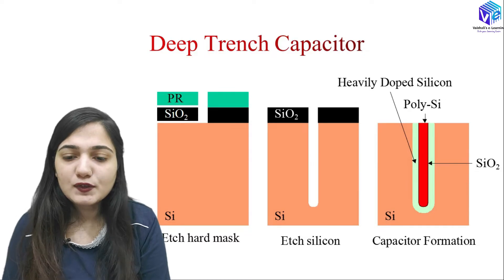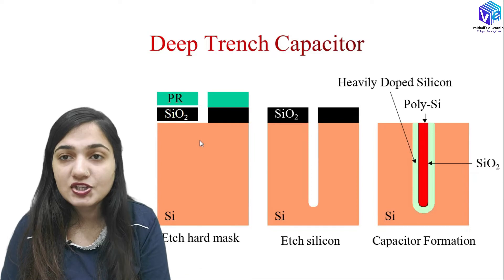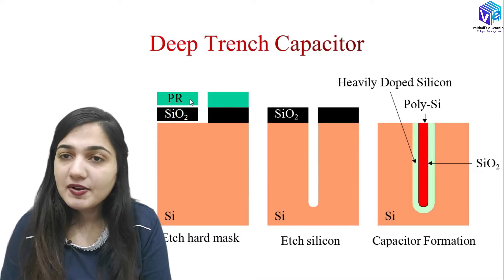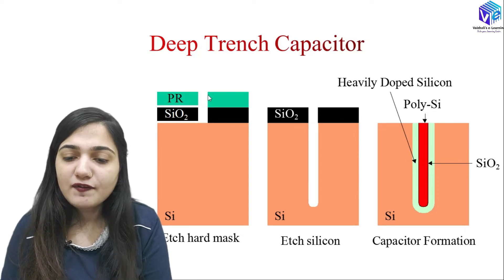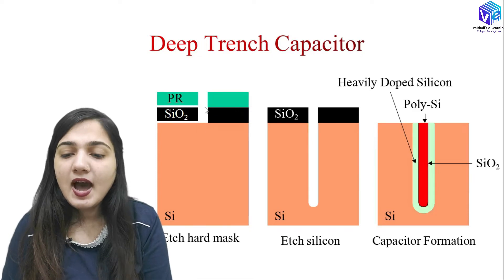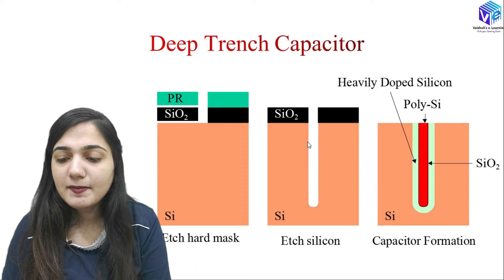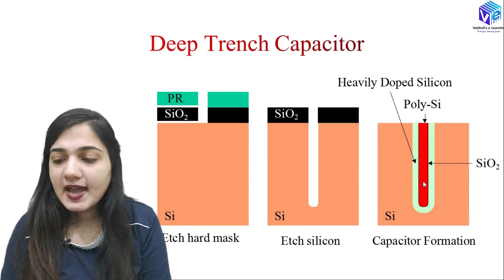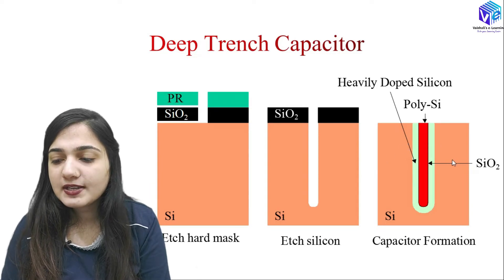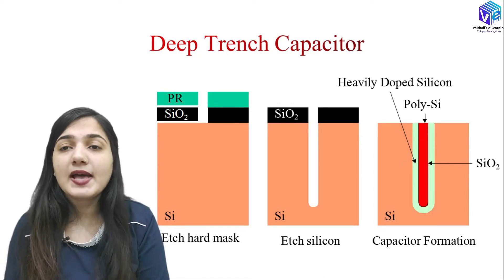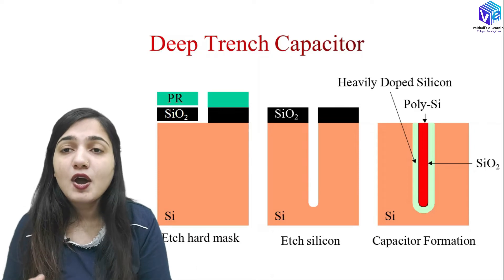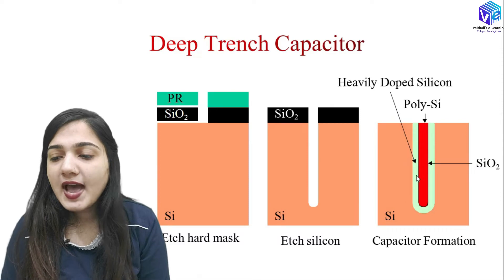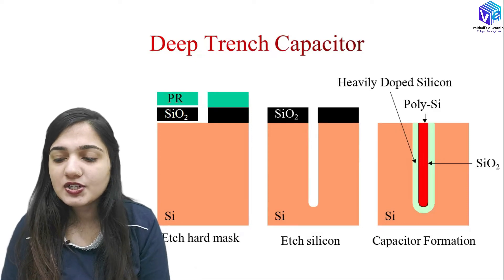I can also make a capacitor. First I have to make a deep trench using a photoresist mask formed by photolithography. After the photolithography process I will have a hard mask, and then I will use hydrogen bromide to etch out the silicon to make this deep trench. Then I will keep silicon dioxide or any dielectric to separate the heavily doped silicon. The heavily doped silicon acts like a conductor, silicon dioxide acts like a dielectric, and this whole structure acts like a capacitor.